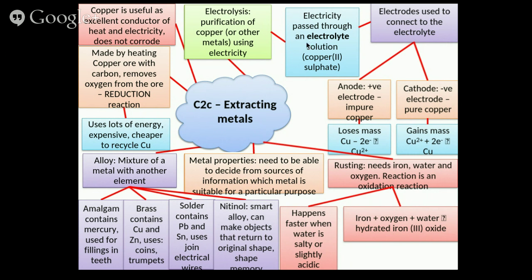Let's look at some other metals. First, there's rusting. Rusting is when you take iron, but you also have to have water and oxygen. This is an oxidation reaction where they join together to make hydrated iron(III) oxide. Sometimes if you're driving and look at a cliff face and it's quite orange, that's because it's got iron particles that have reacted with water and oxygen. If you take away the oxygen or the water, the rusting process will not take place.